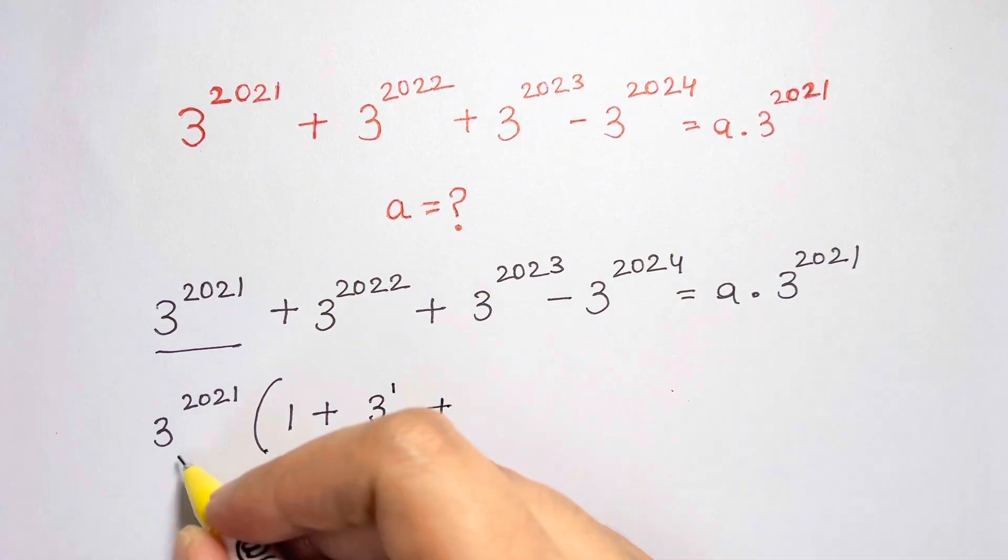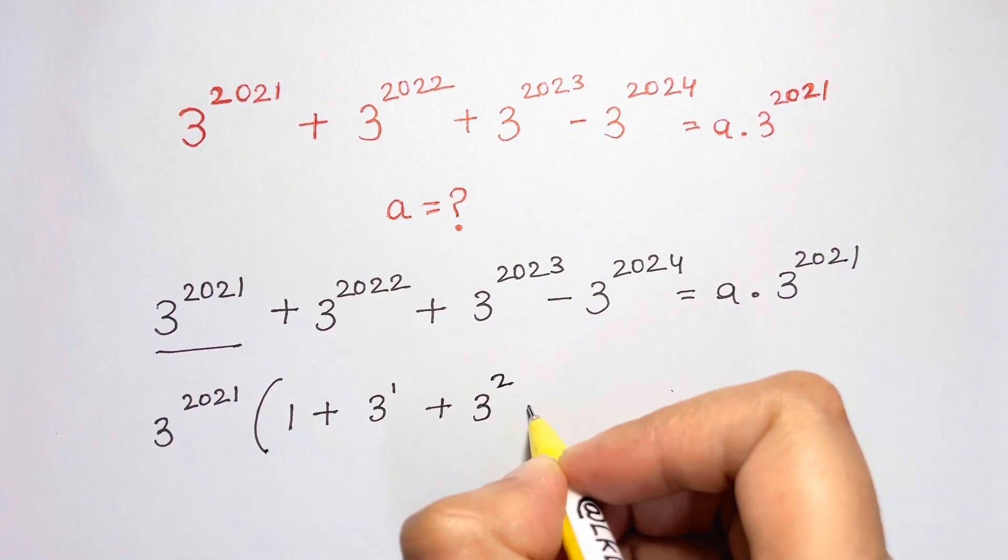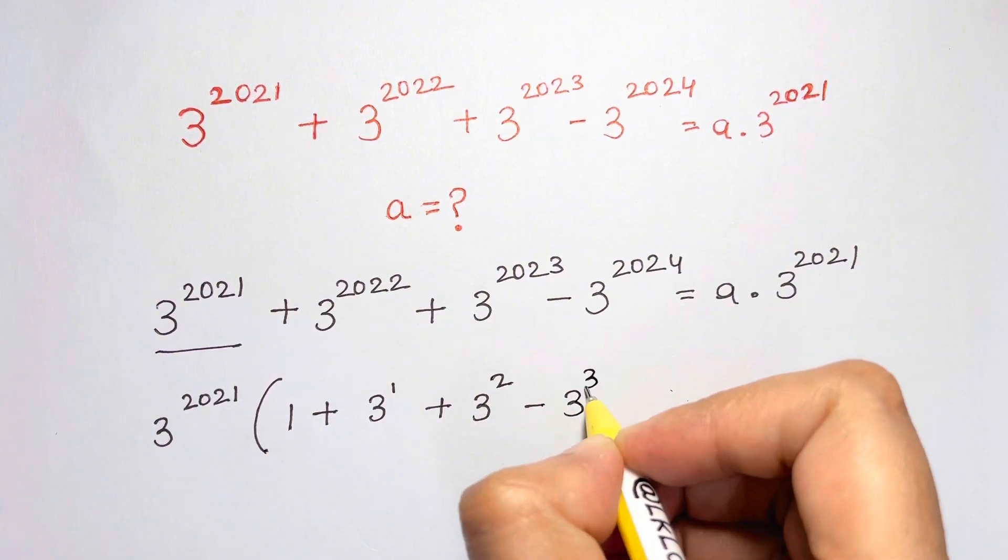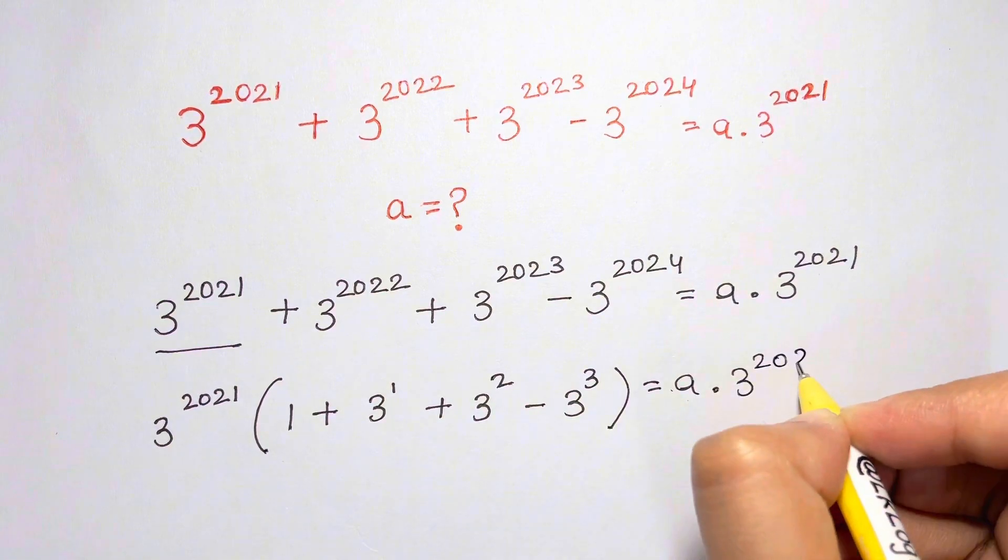Next one, we get 3 squared and minus 3 cubed, which is equal to A times 3 to the 2021.